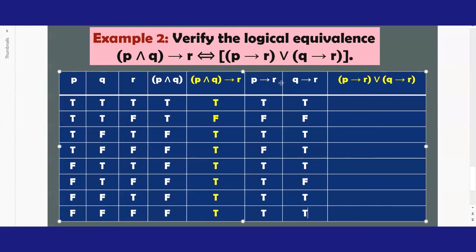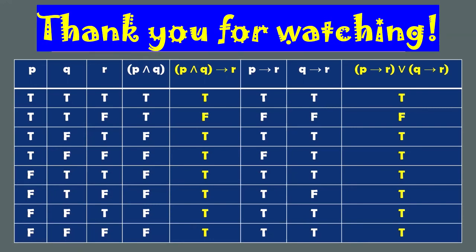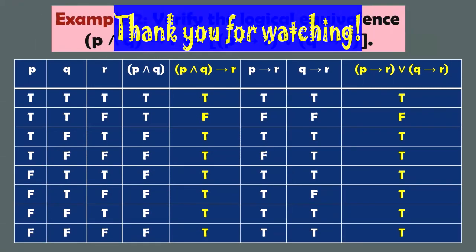Finally, we combine 'if P then R' and 'if Q then R' using 'or.' If at least one is true, the combination is true. Only row 2 has both false, so that row gives false; all other rows are true. The two propositions have the same set of truth values, so they are logically equivalent. I hope you learned something from this video. Please like and share this video, and subscribe to my channel for more videos like this. Thank you for watching — see you in my next video!